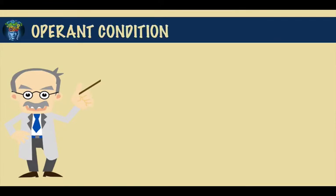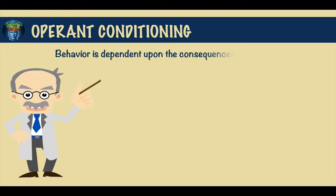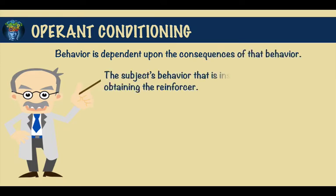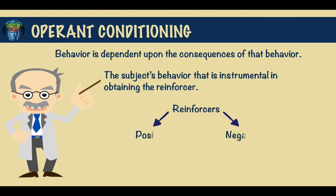A central concept of operant conditioning is that any given behavior is dependent upon the consequences of that behavior. It is the subject's behavior that is instrumental in obtaining the reinforcer. Reinforcers can be either positive or negative, and both seek to increase the likelihood of a behavior occurring again.